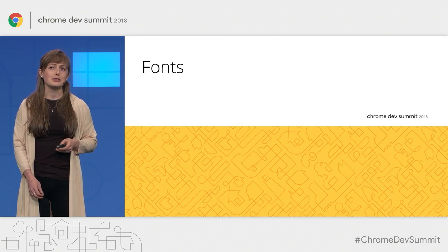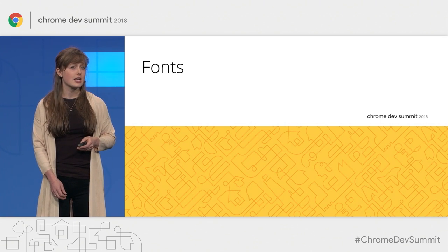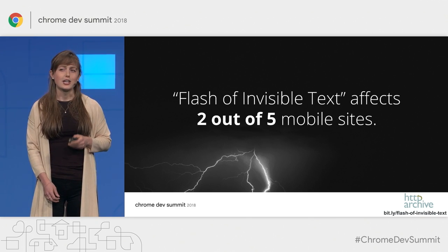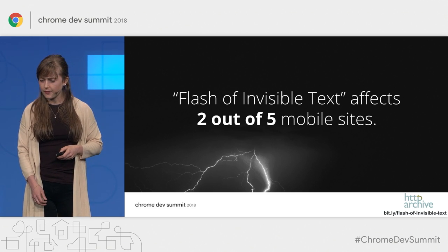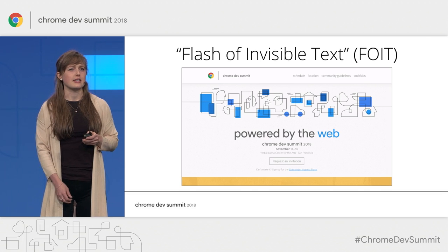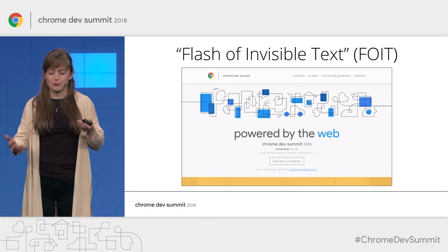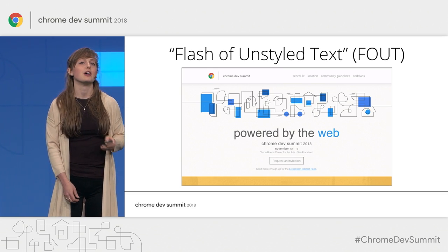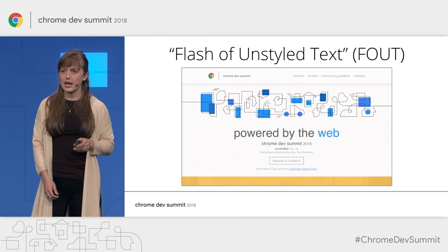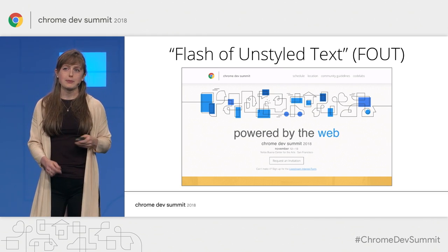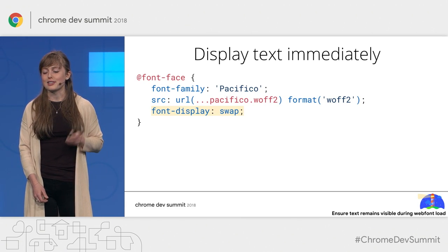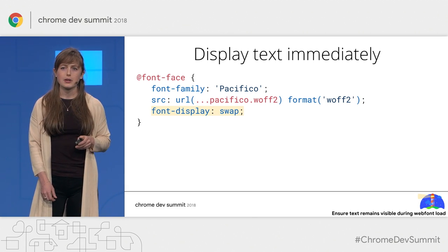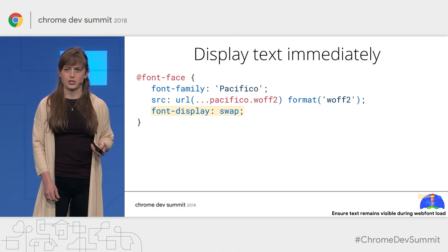Web fonts can cause performance problems because they are typically large files downloaded from third-party sites, which means they can take a while to load. This leads to the phenomenon known as the flash of invisible text, which shockingly affects two out of every five mobile sites. What you want to incur instead is the flash of unstyled text — where the browser initially displays text using a system font and then swaps it out for the custom font once it arrives. The good news is that this fix is literally a one-liner: everywhere in your CSS where you declare a font-face, add the line font-display: swap.